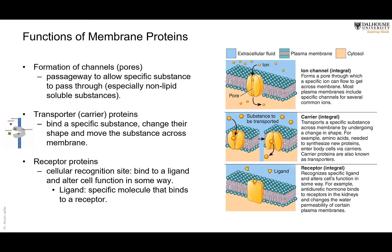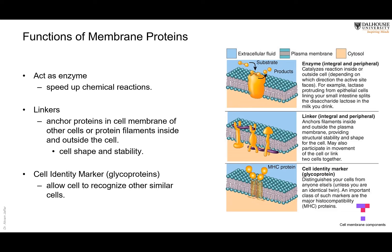Proteins act as channels and pores, but some molecules are too large to pass through them. In that case, carrier or transporter proteins change their shape in order to allow these large molecules to enter the cell. Some proteins are receptors for cell-to-cell messages. They also act as enzymes to speed up chemical reactions, and some act as anchorage points — anchoring one cell to a nearby cell or to protein filaments present in the cytoplasm. We'll talk about those filaments next time. Proteins also act as cell identity markers, which is the specific function of glycoproteins.